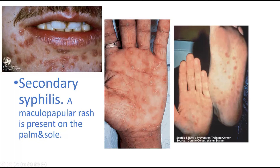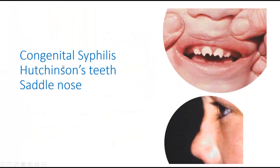Rash is a sign. Also, Hutchinson's teeth — this notch in the teeth occurring in cases of congenital syphilis — is a sign. And the saddle nose is also a sign. So you have to know the symptoms and signs of each disease.